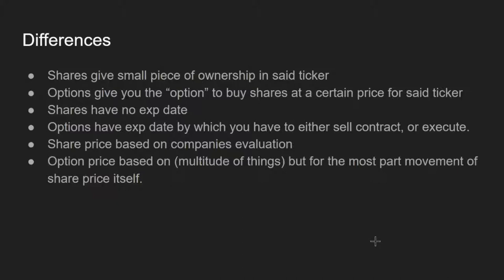When you buy a share of a stock it gives you a small piece of ownership in that ticker. So if you buy five shares of Apple, that is a small piece of ownership in Apple the company. Options, on the other hand, give you the option to buy shares at a certain price — the strike price. So if you buy an options contract, you have the option to buy Apple shares at the strike price of your contract.